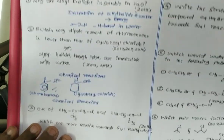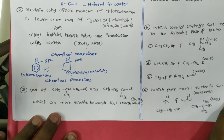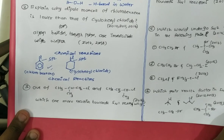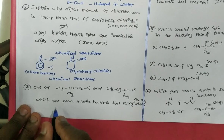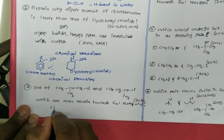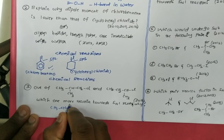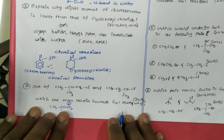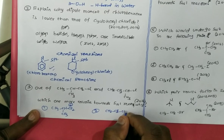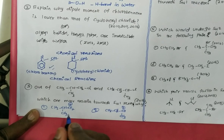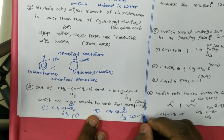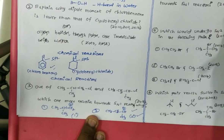The third question is very important: out of these two compounds, which one undergoes SN1 reaction faster and why? SN1 proceeds through a carbocation mechanism. When a protic solvent is used, the Cl leaves and a carbocation forms. The first compound gives a primary (1°) carbocation, and the second compound gives a secondary (2°) carbocation. Since 2° carbocation is more stable than 1°, the second compound undergoes SN1 reaction faster.